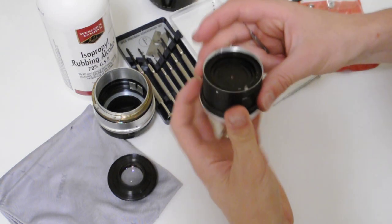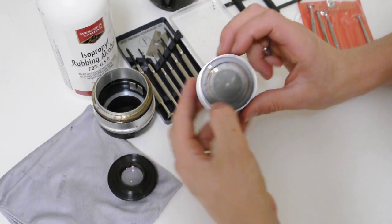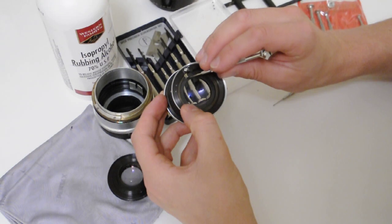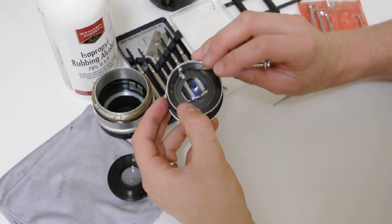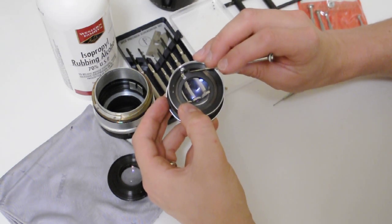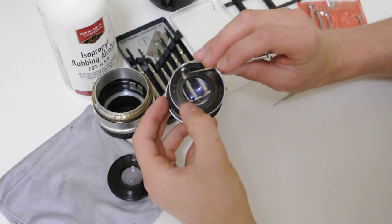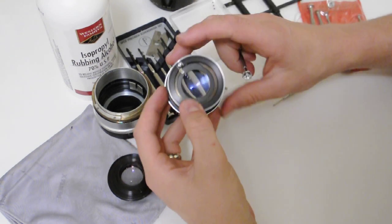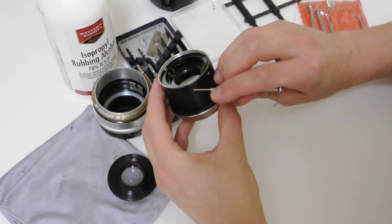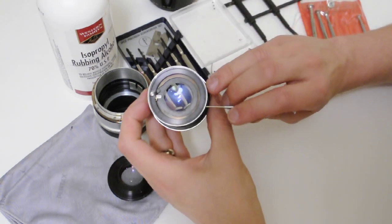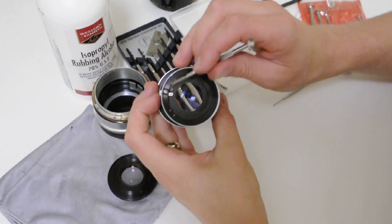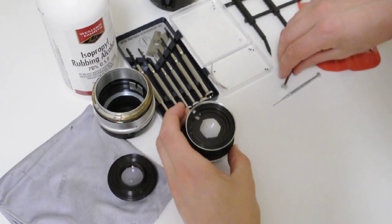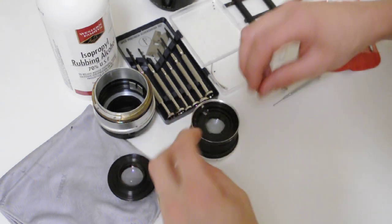Before you pull this out, you need to take note of what's going on here. This stops the aperture from closing too far and it sits on the left side of this spring-loaded stopper. Then you also have what closes the aperture - it's on the right hand side. Just take note of that because you have to put it back together.